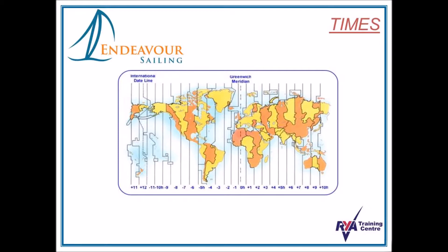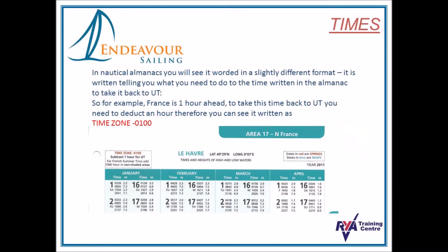But let's now look at how this is represented in the almanac. As you can see, it is worded slightly differently. It is worded giving you the correction that you need to take it back to UT. To emphasise, France is one hour ahead. So to take this back to UT, you need to deduct an hour. Therefore, you see it written as time zone minus 100 — time zone minus one hour.